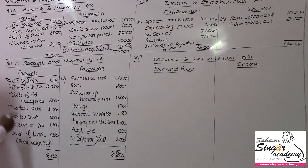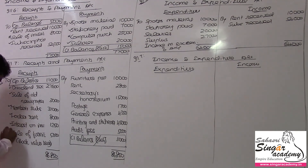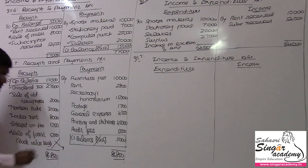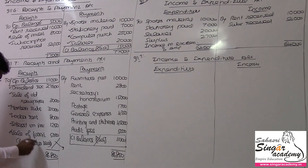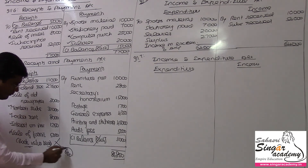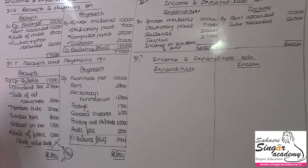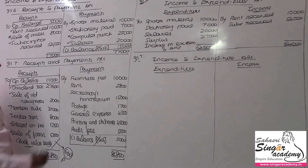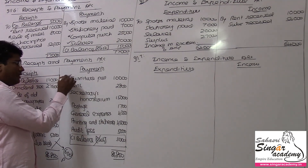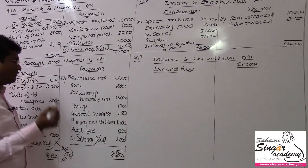Interest on investment is revenue expenditure. Sale of furniture is a capital item - it goes to income and expenditure as profit or loss only. The book value of the furniture is 4,400 and the sale value is 5,000, so the profit is 600 rupees. Furniture purchased is capital expenditure and will not come into the I&E account.